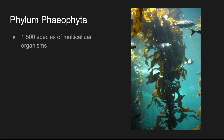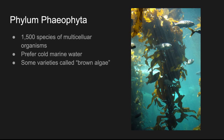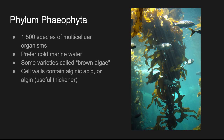This phylum has 1,500 species of multicellular organisms. They prefer cold marine water and some varieties are called brown algae. Their cell walls contain alginic acid, or algin, which is a useful thickener. If you look on the ingredients lists of some things that would take a thickener — for example, ice cream — you might see algin or alginic acid listed. It might just say 'thickener' and not specify, but this is a common thickener.